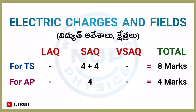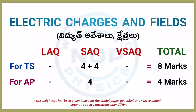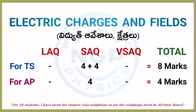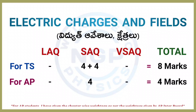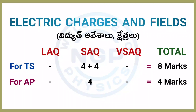Next chapter: Electric Charges and Fields. For Telangana students, 2 four-marks questions are there. For AP students, one 4-marks question. TS chapter weightage is 8 marks and AP chapter weightage is 4 marks.